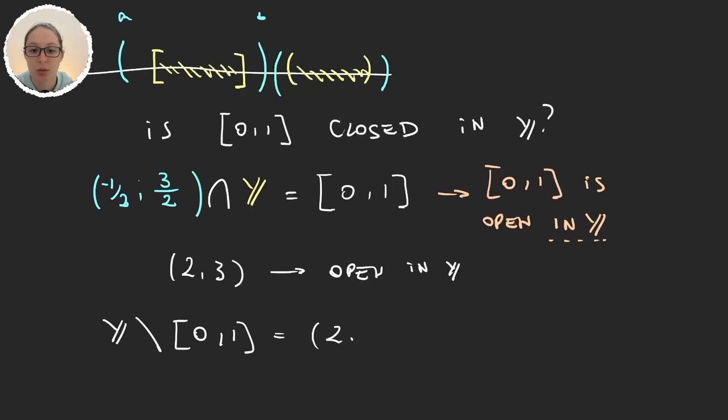So in this case it would be Y minus [0,1]. This is (2,3). And (2,3) we just said was an open set. So this tells us that [0,1] is closed in Y.